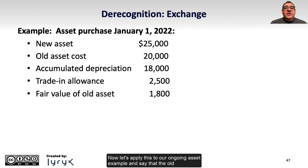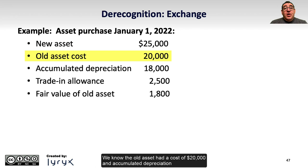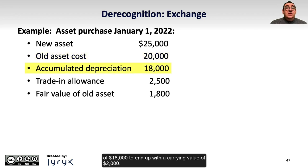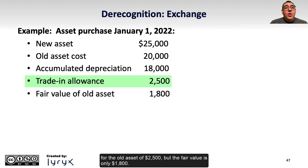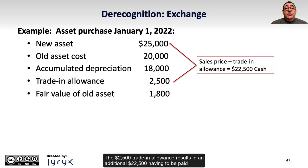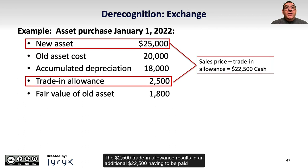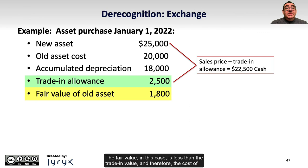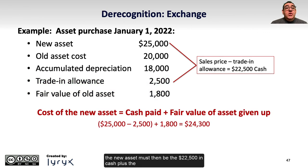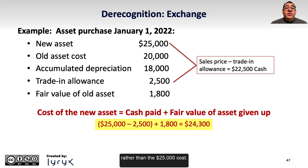Now let's apply this to our ongoing asset example and say that the old asset would be exchanged for a new asset with a cost of $25,000. The old asset had a cost of $20,000 and accumulated depreciation of $18,000, ending with a carrying value of $2,000. The seller offers a trade-in allowance for the old asset of $2,500, but the fair value is only $1,800. The $2,500 trade-in allowance results in an additional $22,500 having to be paid in cash to add up to the new cost of $25,000. Since fair value is less than the trade-in value, the cost of the new asset must be the $22,500 cash plus the $1,800 fair value of the old asset, for a final value of $24,300 rather than $25,000.